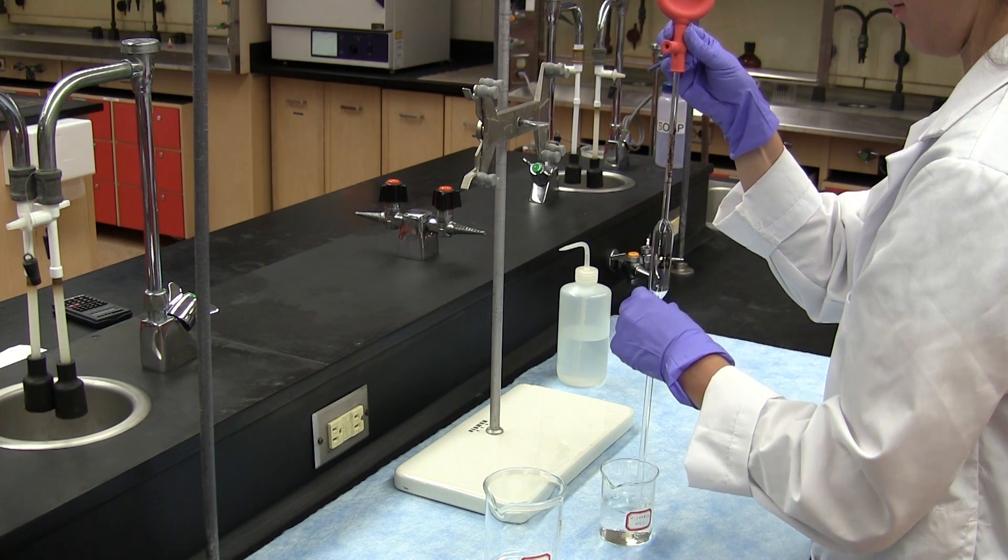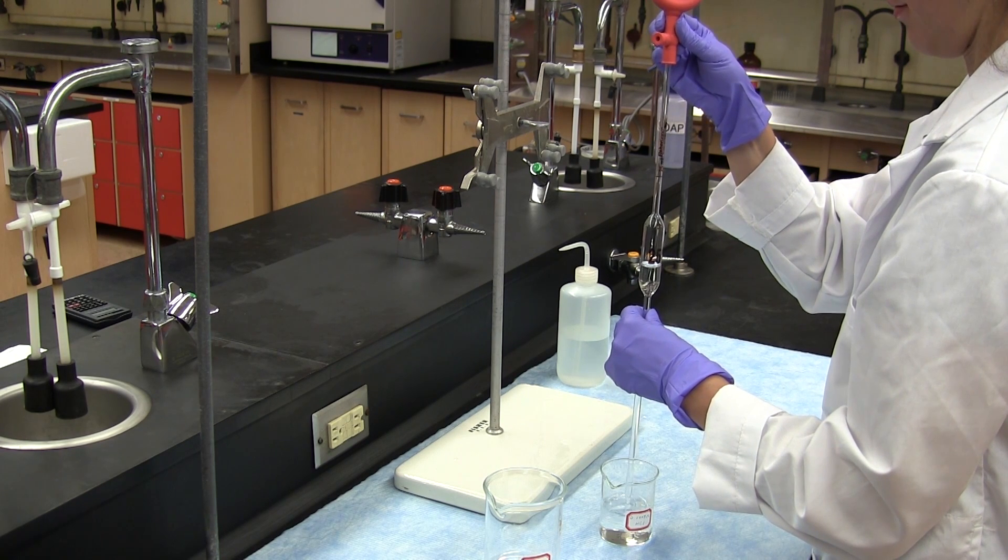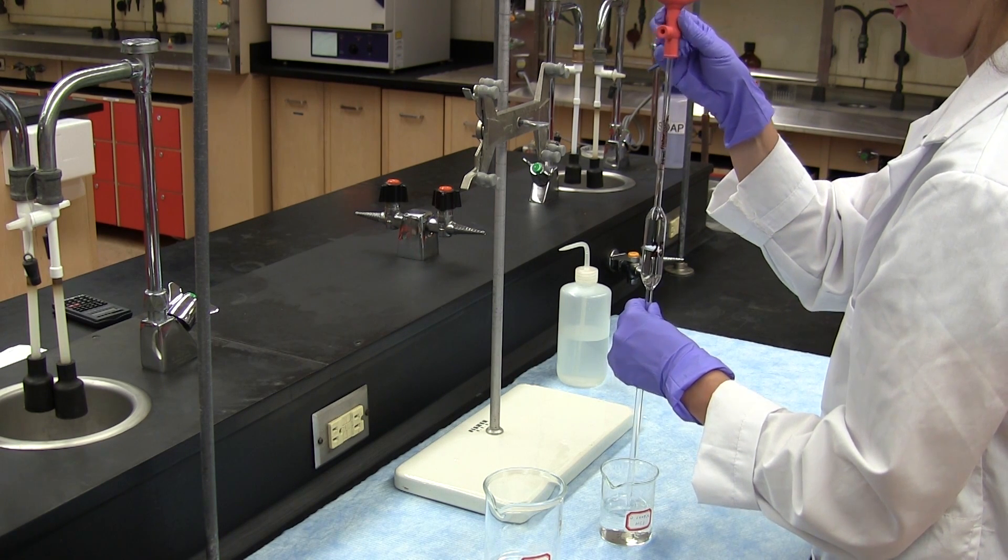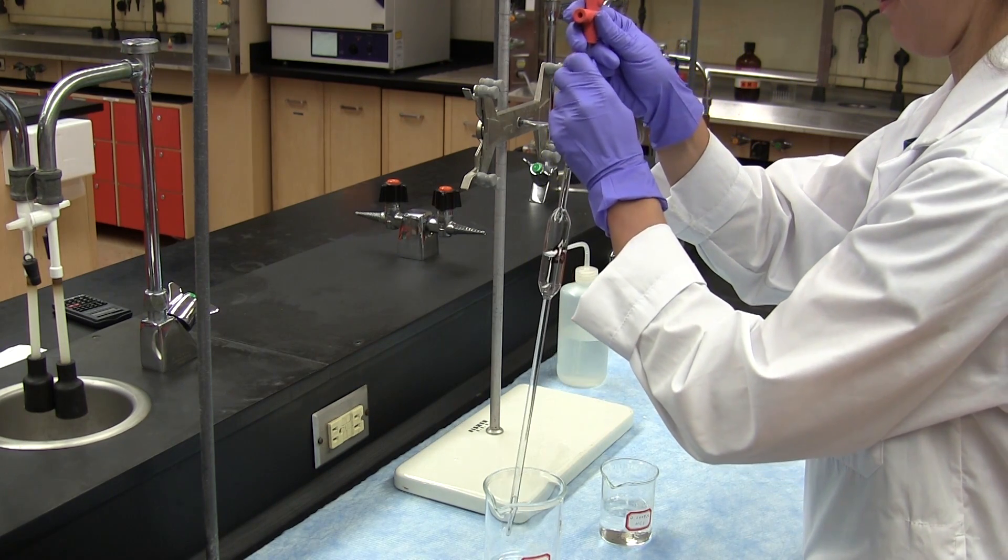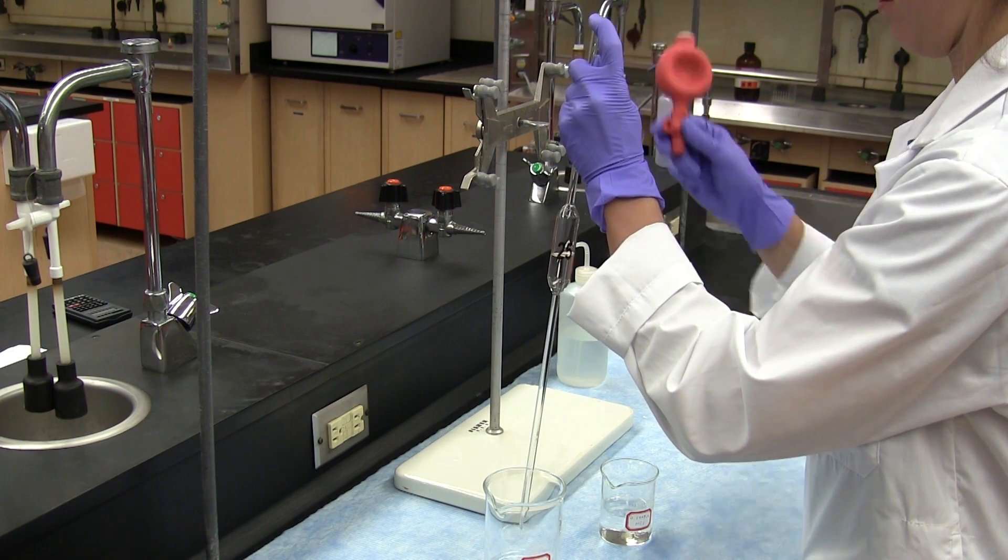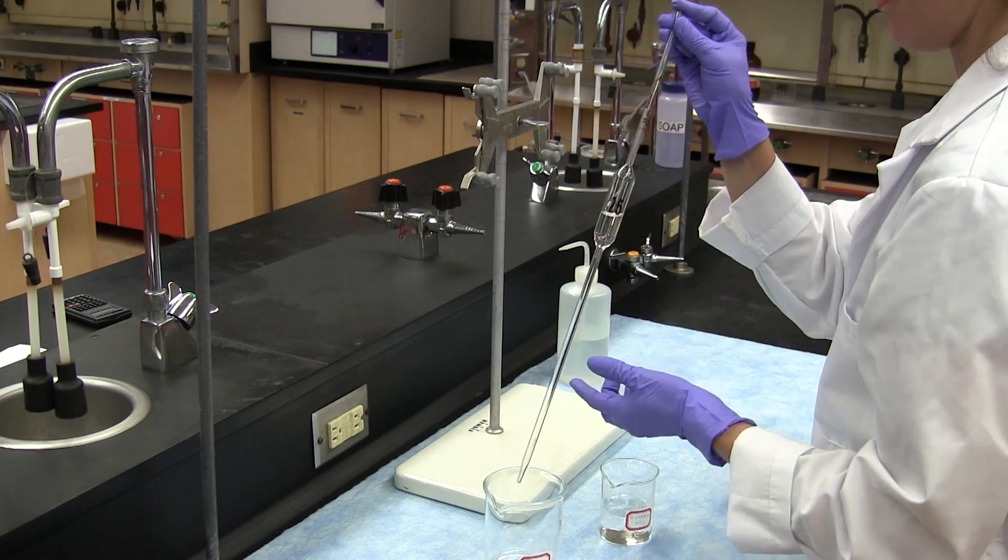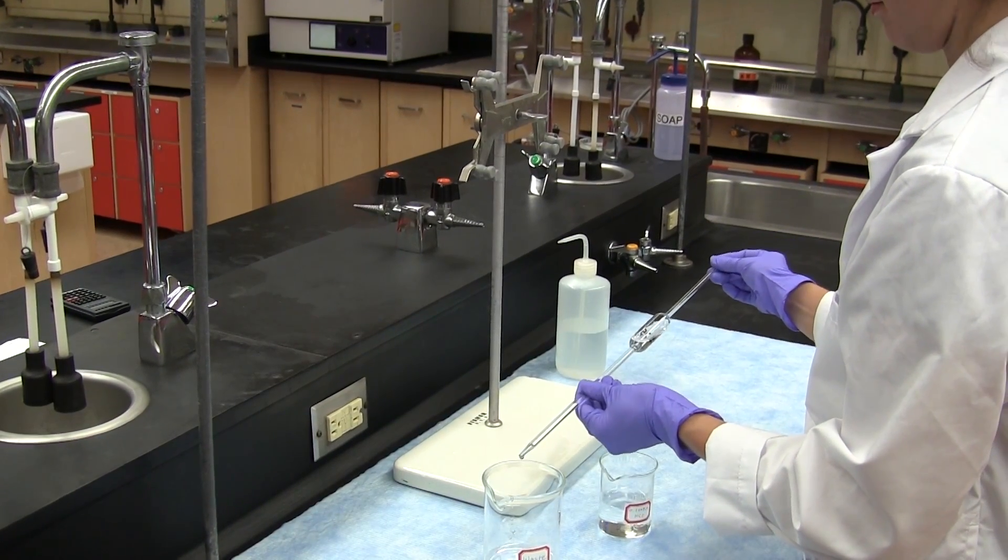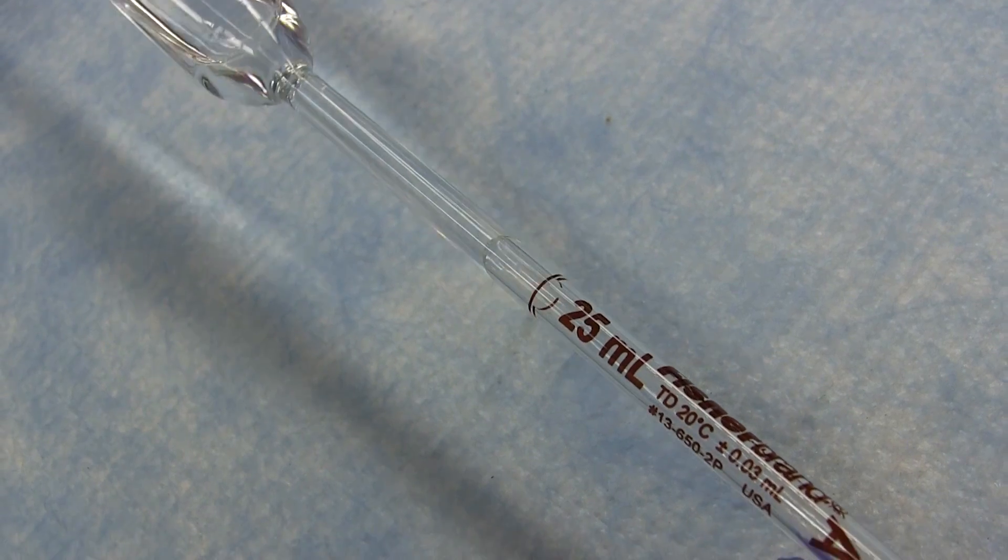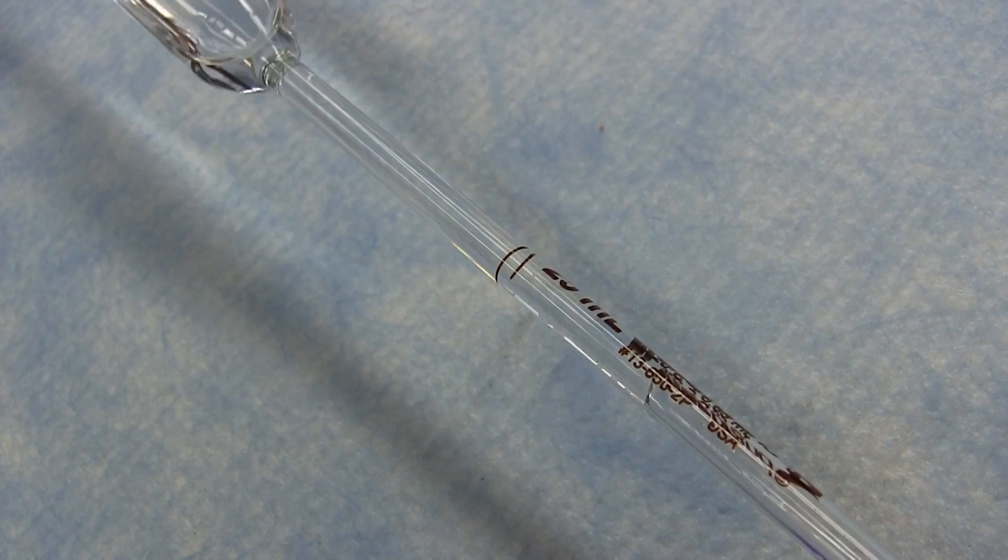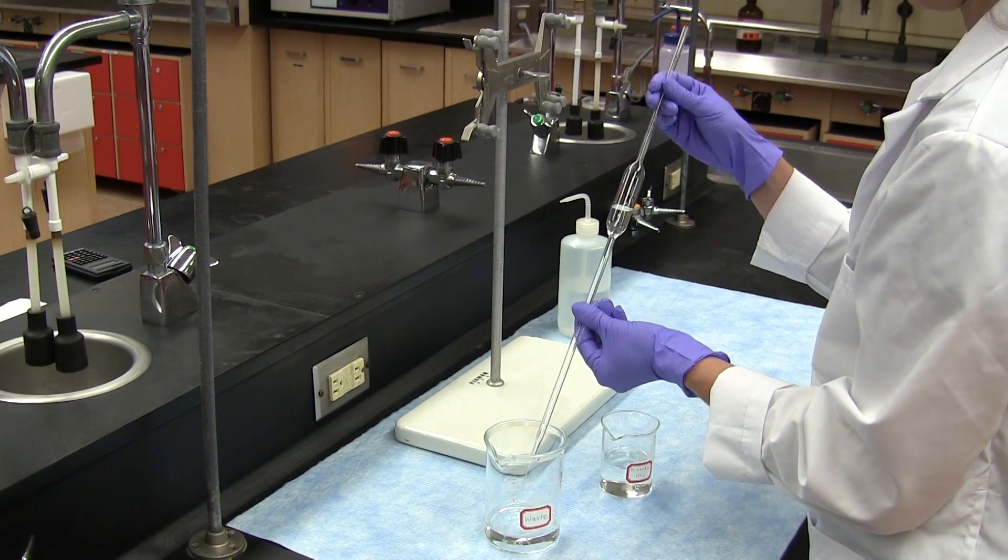The pipette is approximately half filled with the solution. The pipette filler is removed and an index finger placed on the top of the pipette. The pipette is then tilted and rotated to allow the solution to coat the inside surface to about two to three centimeters above the calibration mark and then discard the solution into a waste beaker.